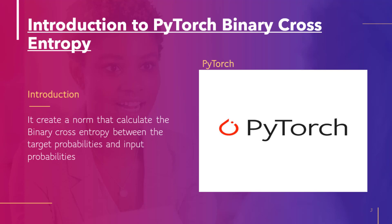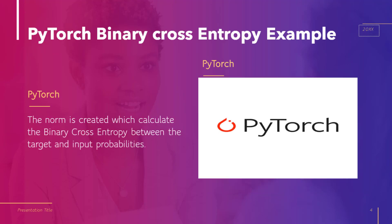Now let's move to our next topic: PyTorch Binary Cross Entropy Example. As we know, a function is created which calculates the binary cross entropy between the target and the input variable. It is also used for calculating the error of the reconstruction. Now see the implementation of binary cross entropy with the help of an example.